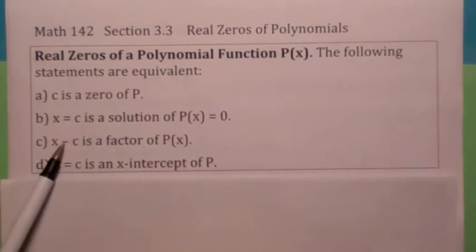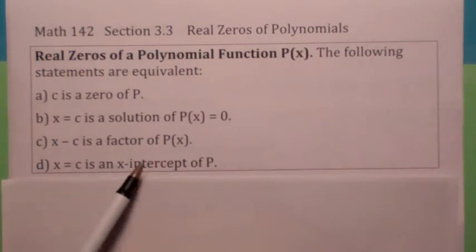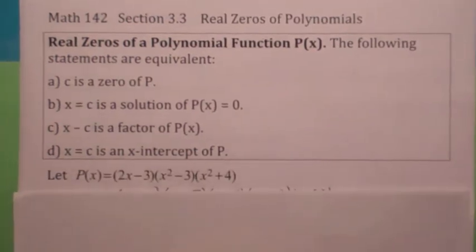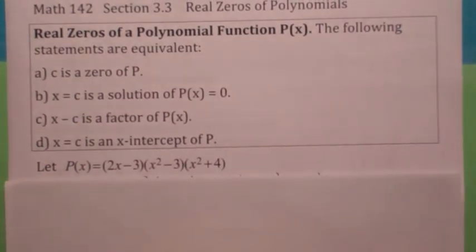It'll also be a factor. Now, it's only if it's a real zero will it be an x-intercept. If you have a non-real zero, it will not correspond to an x-intercept. Anyway, so this is kind of where we're going with this. The idea is if you know the zeros, you know the factors, it helps you graph as long as it's a real zero.